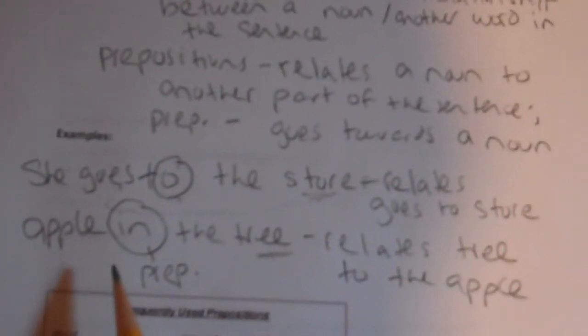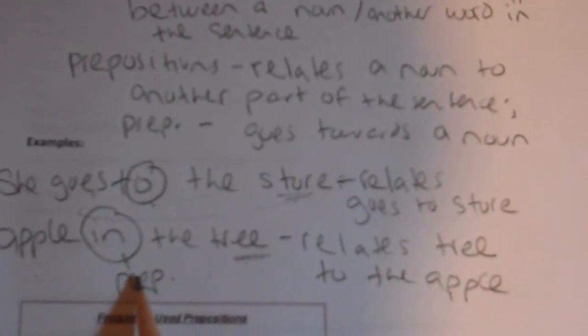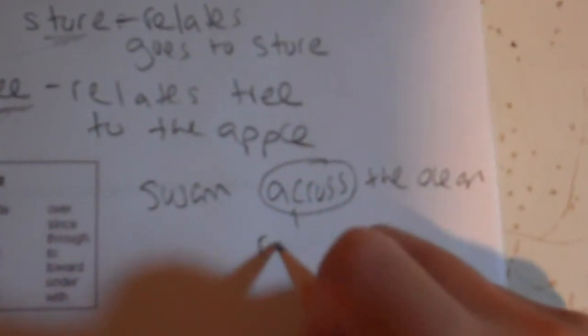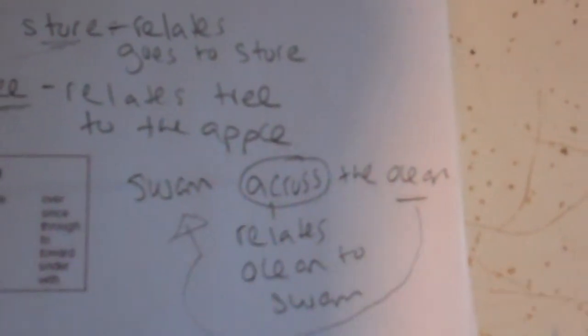So to recap: in 'She goes to the store,' 'to' is relating the noun 'store' to the verb 'go' — telling you where she's going. In 'The apple in the tree,' 'in' relates the noun 'tree' to 'apple' — telling you where the apple is. In 'Swam across the ocean,' 'across' relates 'ocean' back to 'swam.' That's the noun being related to another part of the sentence.